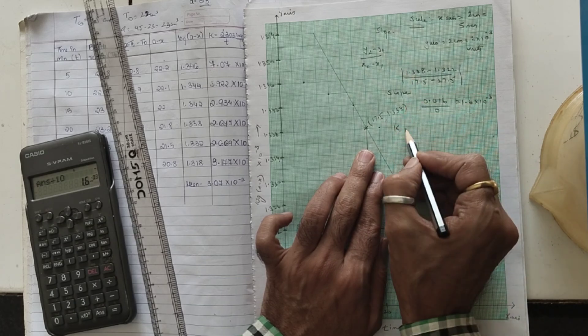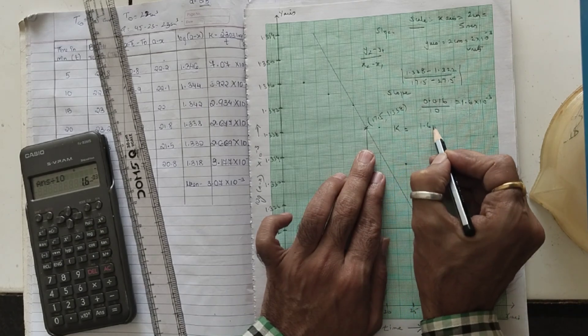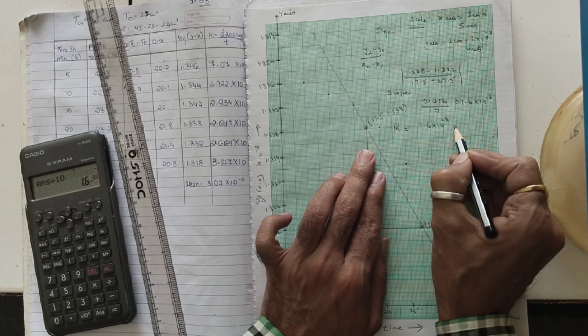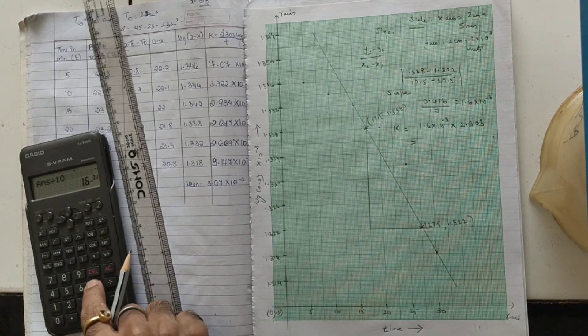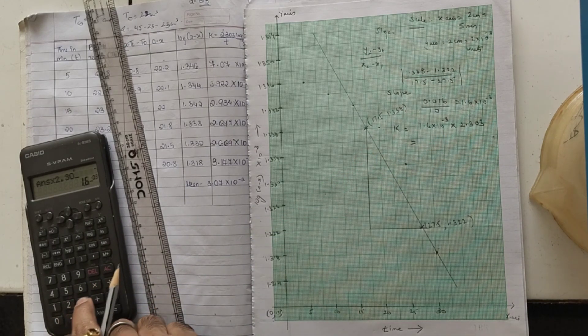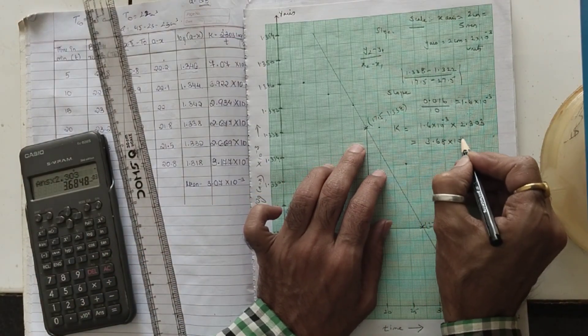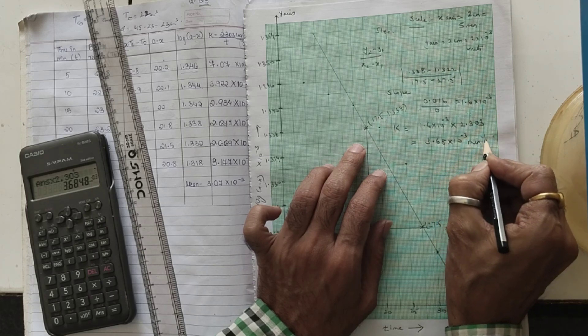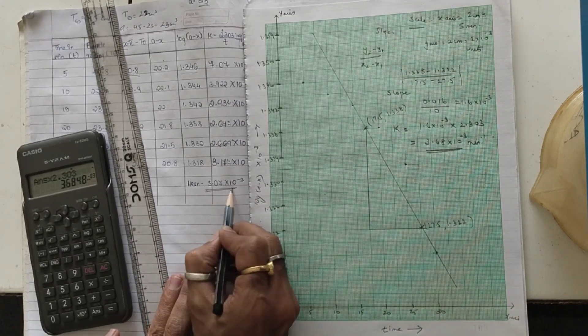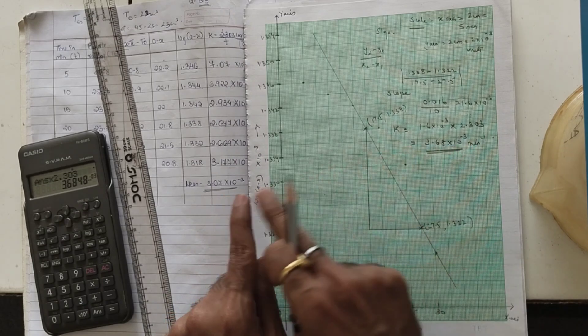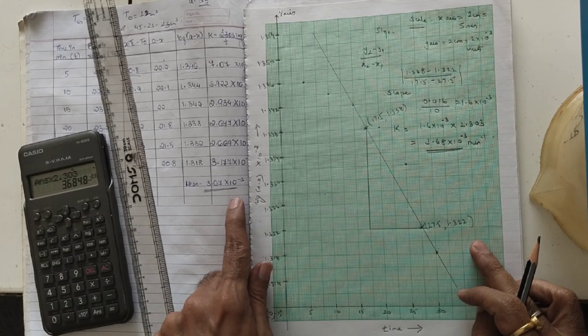The formula is going to be in minus, but we are going to take it in mod. So k, that is the specific reaction rate constant, is the value we are going to take - we are going to ignore the negative sign - multiplied by slope multiplied by 2.303. If you multiply this by 2.303, we get it as 3.68 into 10 raise to minus 3 and the unit is minute inverse. So this is the value of k by graph. You can see the values almost match - 3.07, 3.68. So it's 0.61 but it is into 10 raise to minus 3.